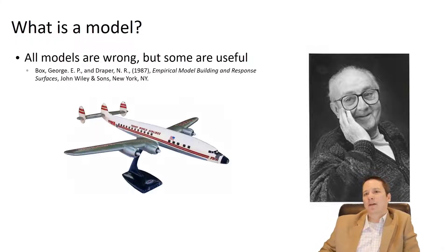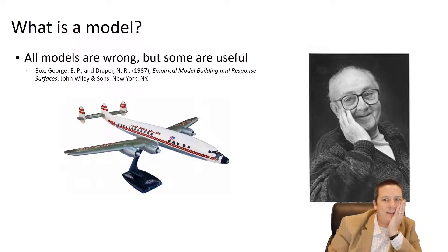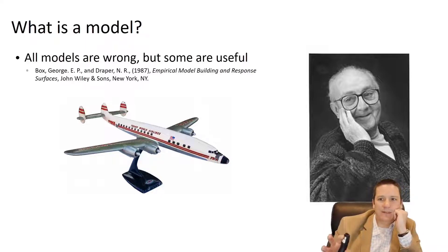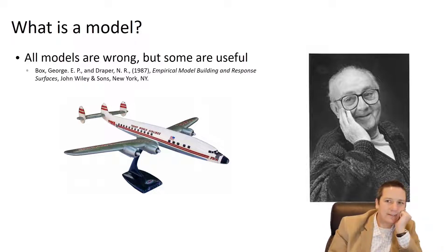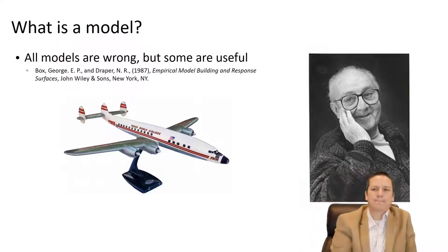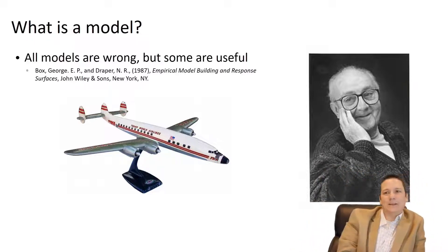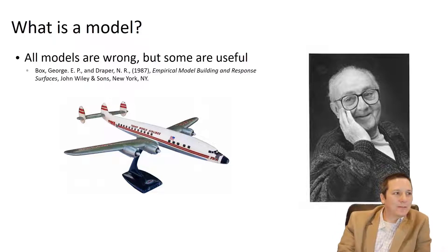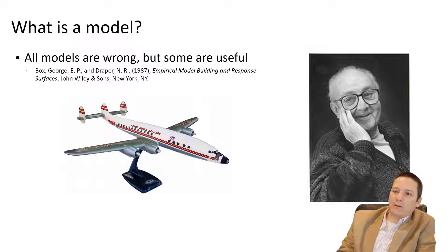Why are all models wrong? Think about it for a minute. We have a model of an airplane here. Does this model really faithfully represent an airplane? Is this a very accurate representation? It's much smaller than an actual airplane. How is this different from an actual airplane?